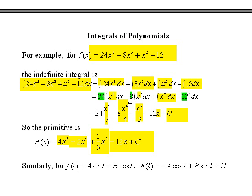The same approach works for trig functions. To find the primitive of a times sine of t plus b times cosine of t: break into two problems. Since the derivative of cosine is minus sine, the primitive of sine t is minus cosine t. Since the derivative of sine is cosine, the primitive of cosine t is sine t. Result: minus a cosine t plus b sine t plus c.